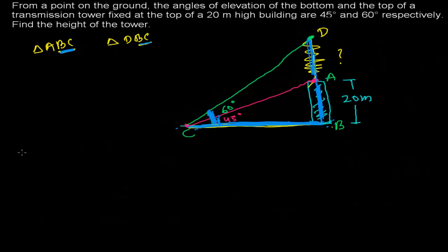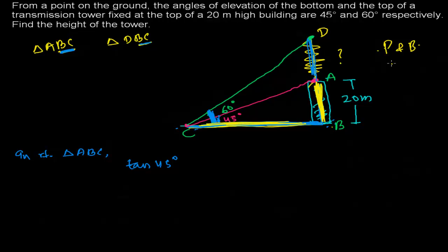So let's work on the small right-angle triangle ABC. We use tan 45 degrees. Why tan? Because we have the perpendicular (opposite) and we need to find the base BC. The relationship between perpendicular and base is tangent. So tan 45° = AB / BC. Tan 45° equals 1, and AB is 20 meters. Therefore BC equals 20 meters.